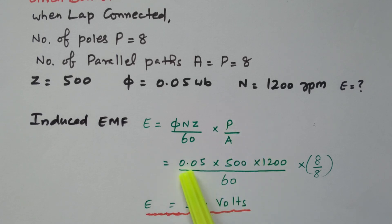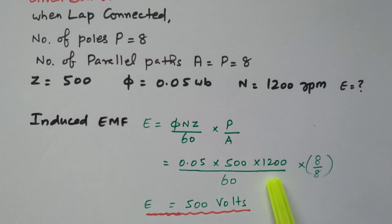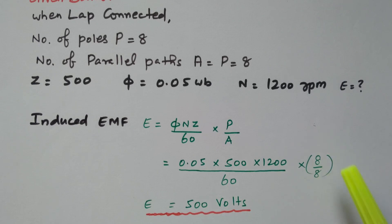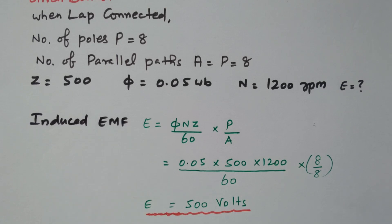Substituting: flux = 0.05, number of conductors = 500, speed = 1200 RPM divided by 60, number of poles = 8, number of parallel paths = 8. By simplifying, we get 500 volts. The EMF induced for the lap connected configuration with the given data is 500 volts.